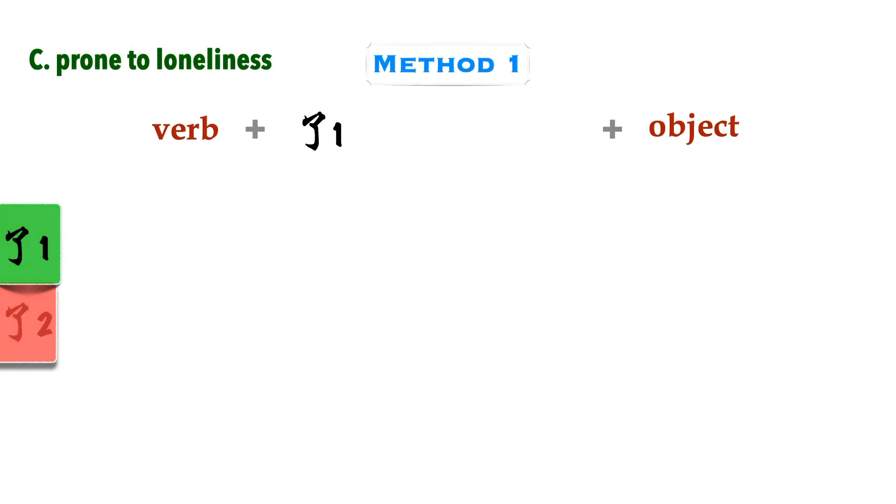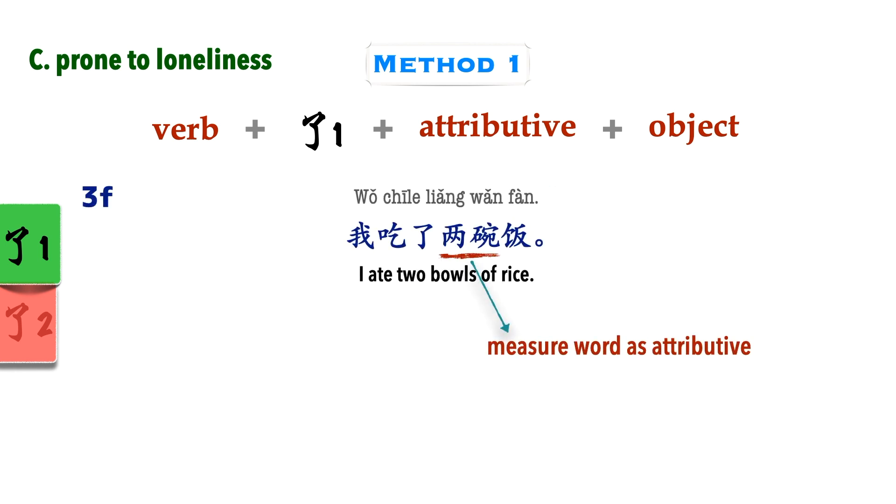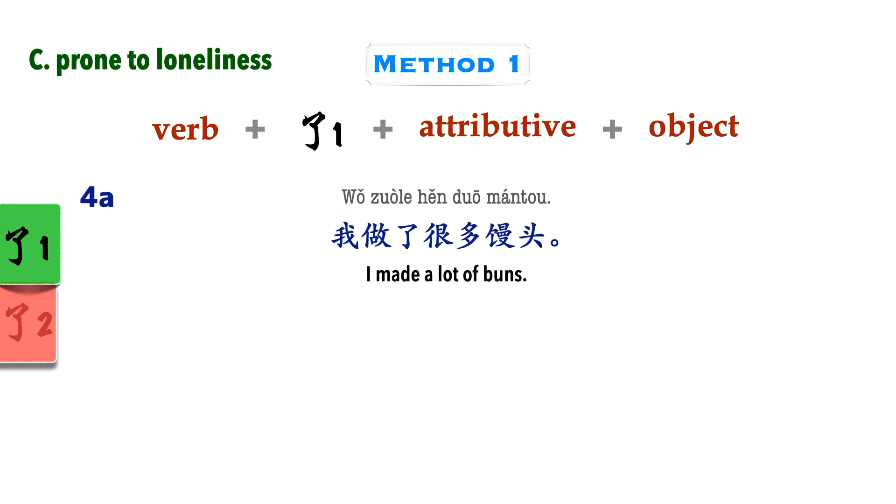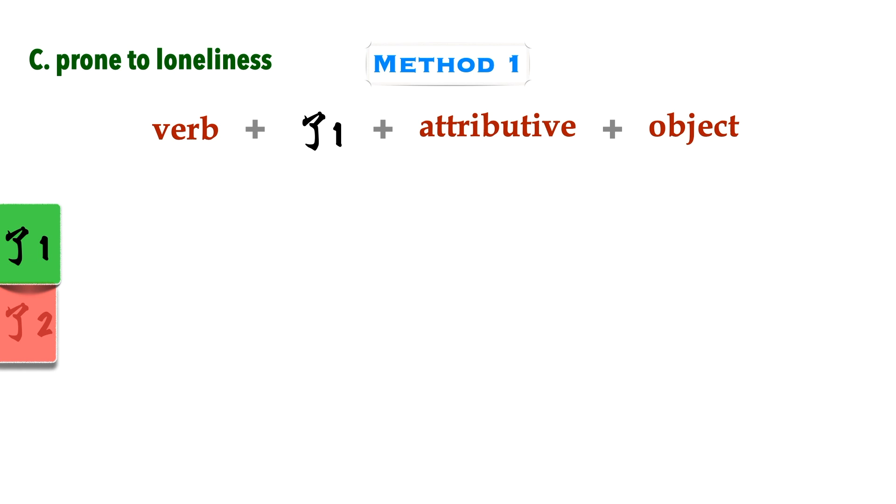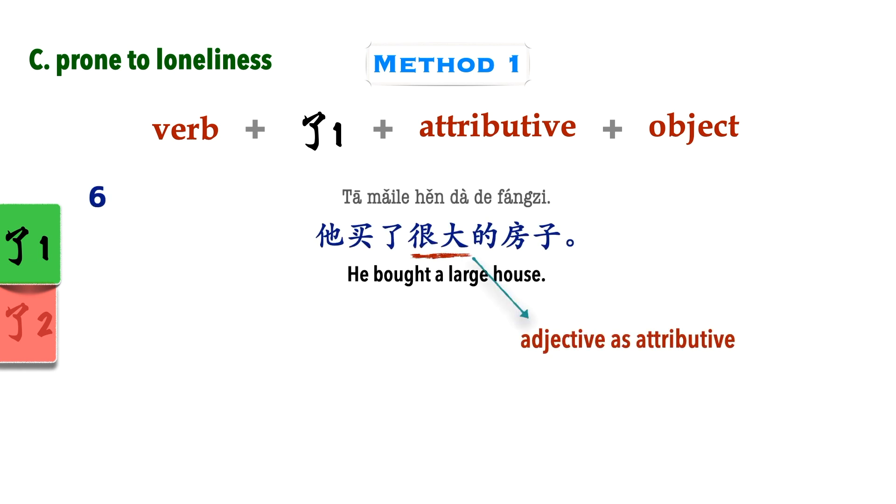The first is to have an attributive before the object. In simpler terms, we need to place something before the object to modify it so that it is more specific. This attributive is typically a measure word, an adjective, or a pronoun. 我吃了两碗饭. Here's more examples with different attributives: 我做了很多馒头, 妹妹吃了我的苹果, 她买了很大的房子.